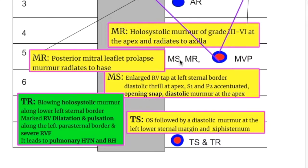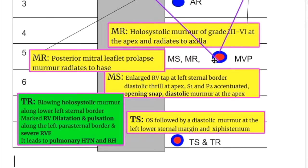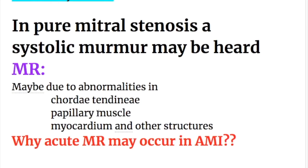Mitral stenotic, mitral regurgitant, and mitral valve prolapse murmurs are best heard in the left fifth intercostal space, or wherever the apex beat is. Mitral regurgitation murmur is best heard in the apex beat area.